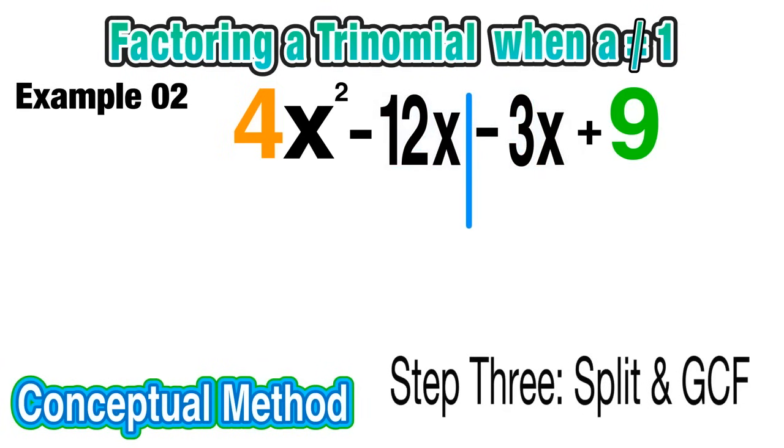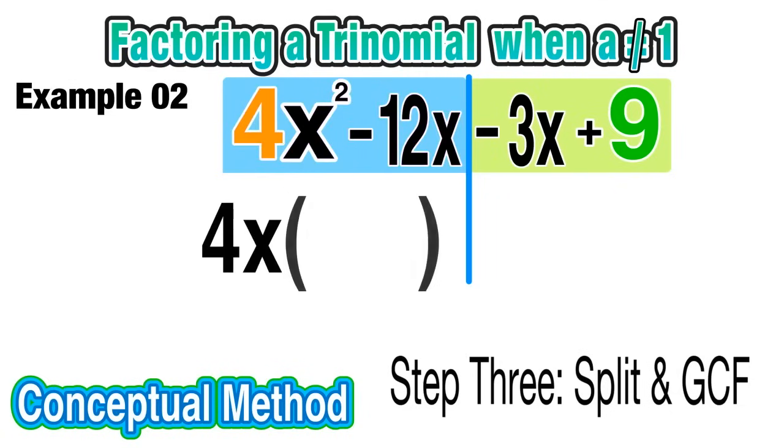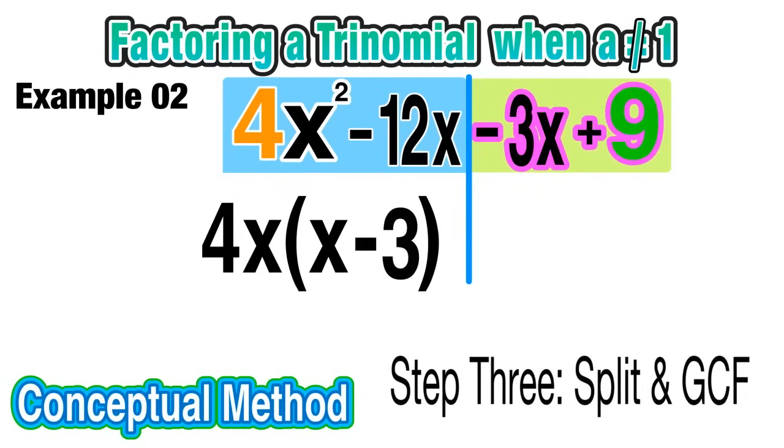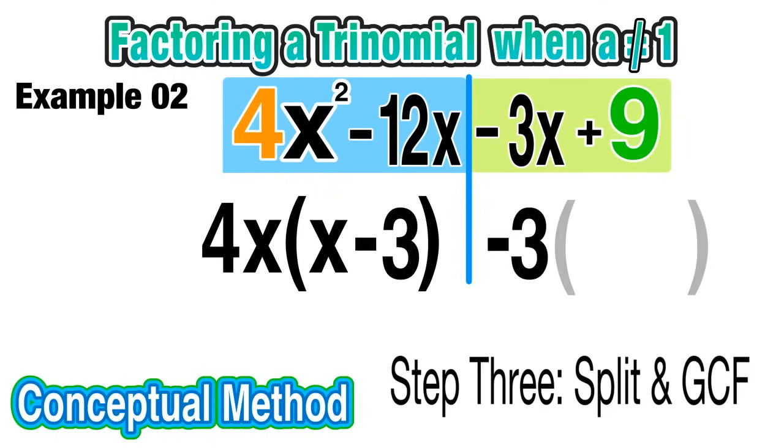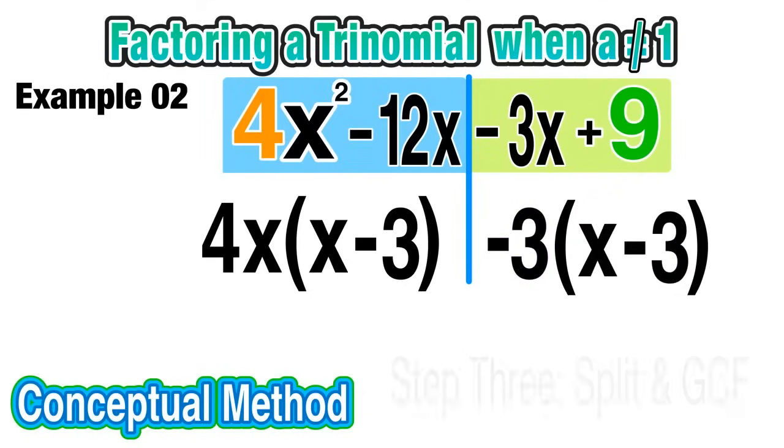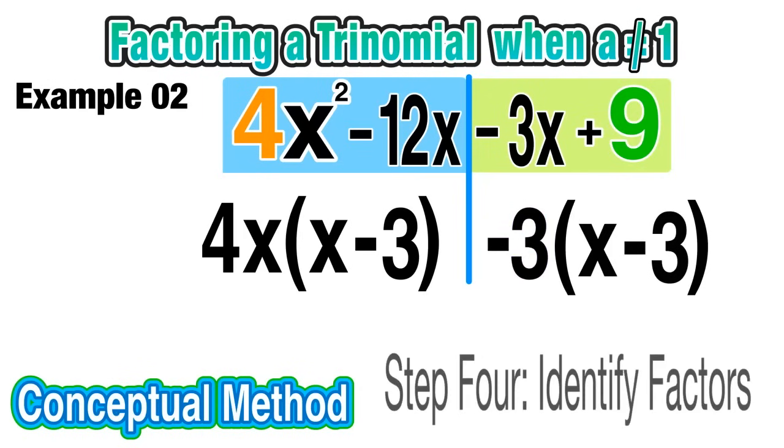Our third step is to split down the middle and pull out the GCF. So on the left side, the GCF of 4x²-12x is just 4x. When I pull 4x from 4x² I'm left with x, and when I pull 4x from -12x I'm left with -3. On the right side, the GCF is -3. When I pull -3 from -3x I'm left with just x, and when I pull -3 from positive 9 I'm left with -3. And finally, I'm ready to identify my factors.